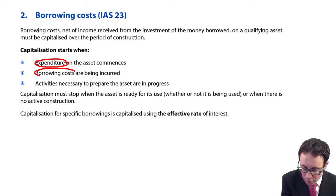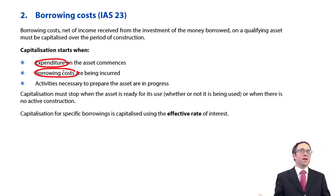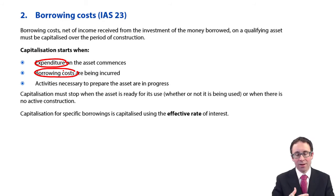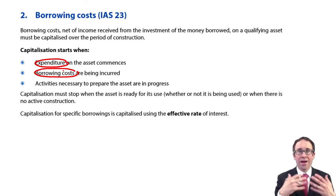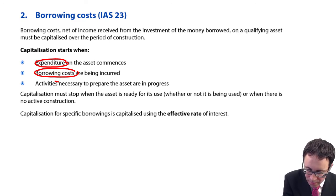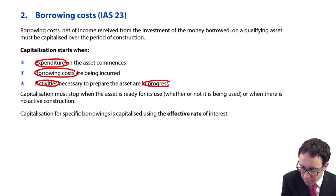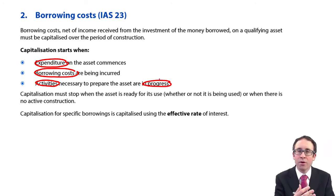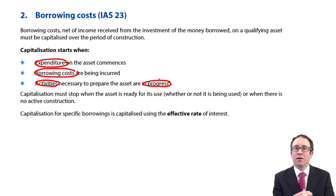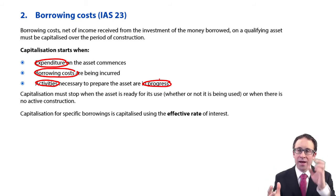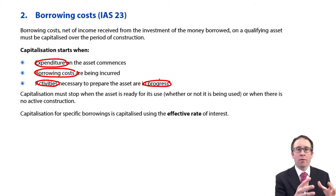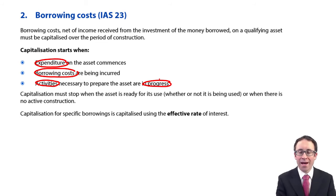Likewise, if we're looking to capitalise the borrowing costs, then we must have taken out the loan — i.e. the borrowing costs are being incurred. We are spending money on the construction. And also, we need to ensure that the activities are in progress. We're actually spending the money, having borrowed it originally, and we are actually doing something to construct the asset. We can't have taken out a loan, be spending the money, and not be doing anything at all. You have to physically have a worker on site beginning the construction. That's when capitalisation can start.